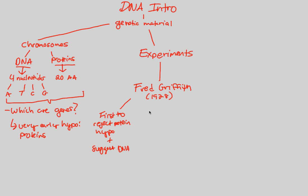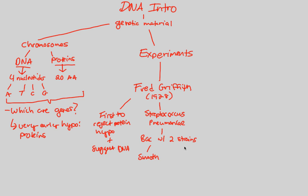What Griffith did was look at Streptococcus pneumoniae — a bacteria with two strains. These two strains are like two different phenotypes that this bacteria can express. It can either be the smooth strain, labeled S, or the rough strain, labeled R. When you plate them on an agar plate and let the bacteria grow, you get either smooth colonies or rough colonies.